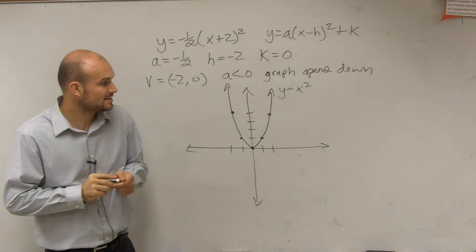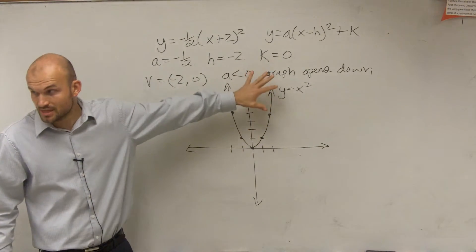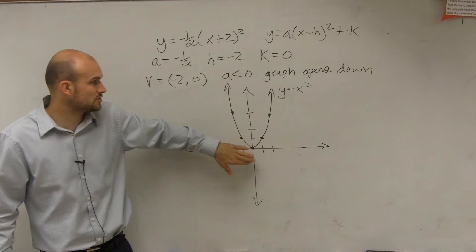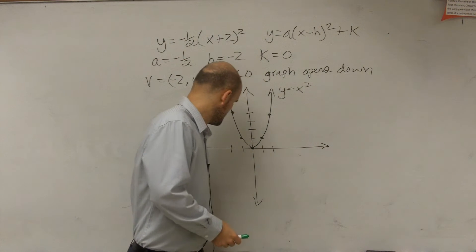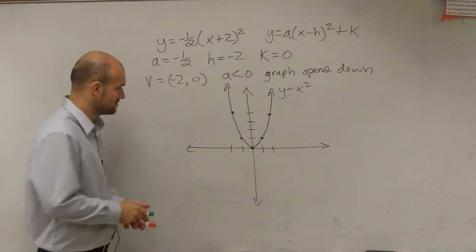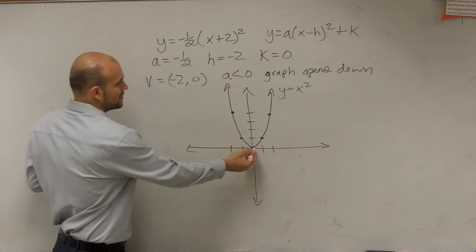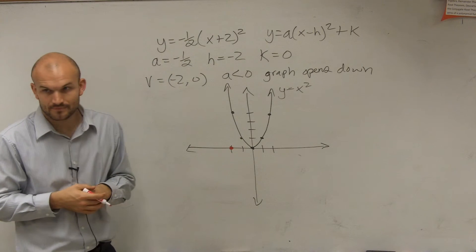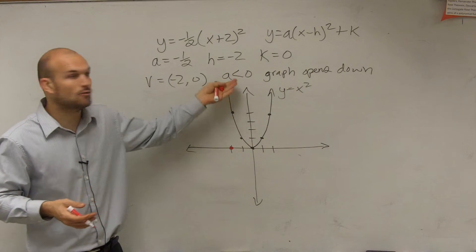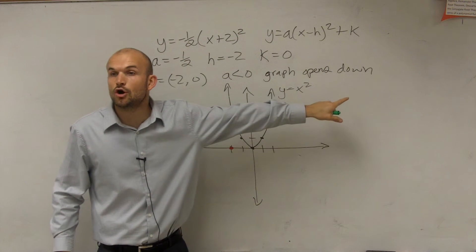Because now what we're going to look at is notice that this graph opens up, right, has a vertex of 0, 0. Now I have a vertex at negative 2 comma 0. So let's go over to negative 2, 0. So now I have a new vertex, right? I know my graph, instead of opening up, now my graph is going to open down.